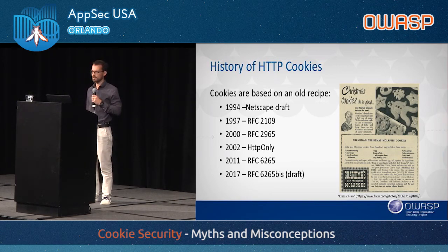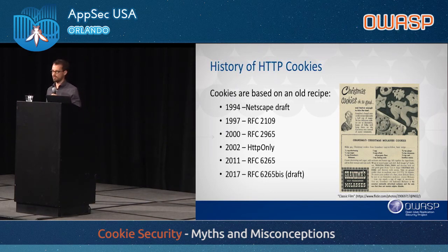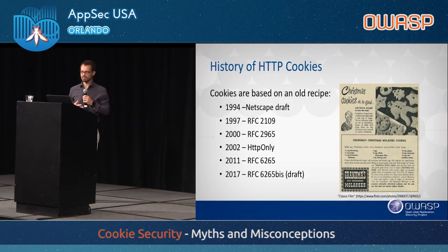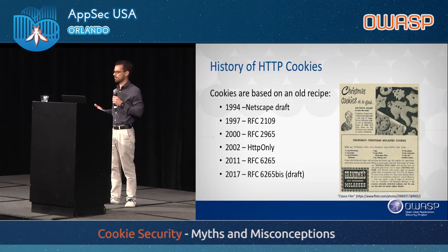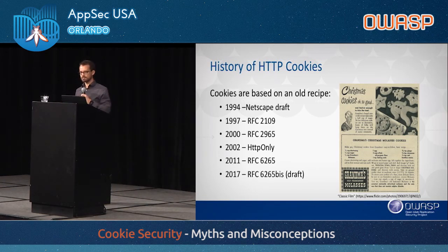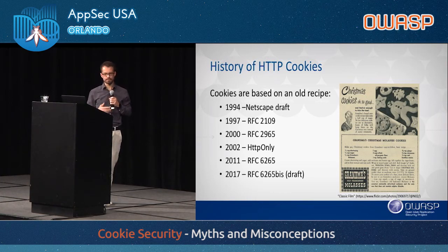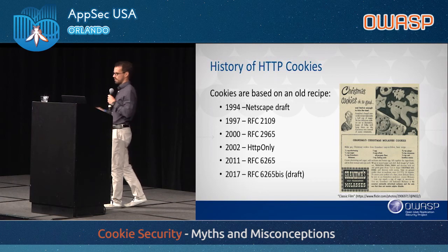It was not until 2011 that RFC 6265 came out. At this point it was quite different from previous attempts at specifying a standard for cookies. Before, they were trying to specify a prescriptive standard for how things should be done. Whereas now it seems like they gave up on that and instead tried to document how cookies are actually working out there in real life. So RFC 6265 is trying to document the way cookies are generally used on the internet and enable new clients to implement in a way that's as compatible as possible with existing services.